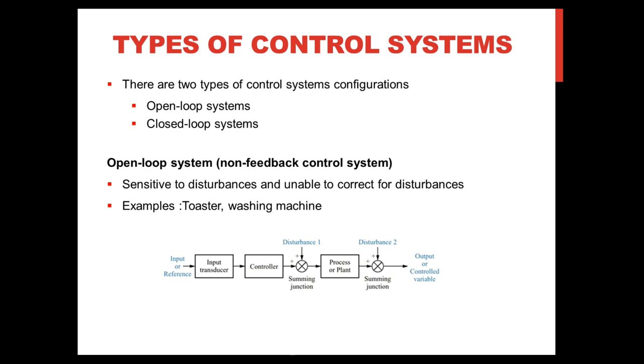In open-loop systems, disturbances are unwanted signals that corrupt the input or output of a plant or process. And in this configuration, open-loop systems do not correct for disturbances and are simply commanded by the input. Two examples of open-loop systems are toasters and washing machines.